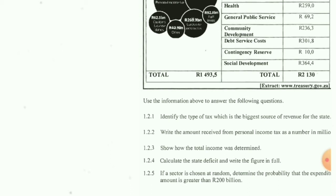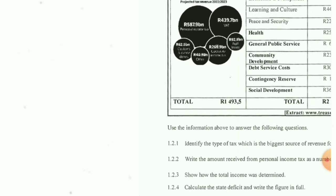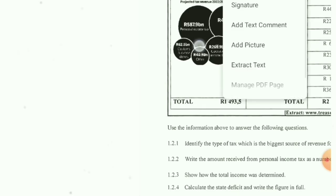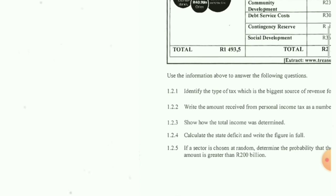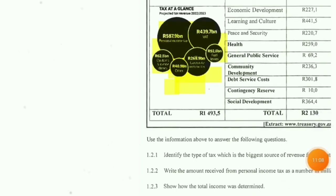Question 1.2.3: Show how the total income was determined. To find total income, you add all the numbers highlighted — all the income figures shown. You add all of them and you will get the total. I'll make sure the corrections are put on screen so you can see properly. That's very straightforward.